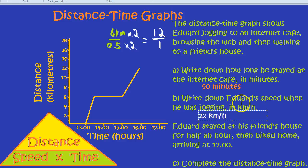There we are. Finally, Eduard stayed at his friend's house for half an hour, then biked home, arriving at five o'clock. Complete the distance time graph.